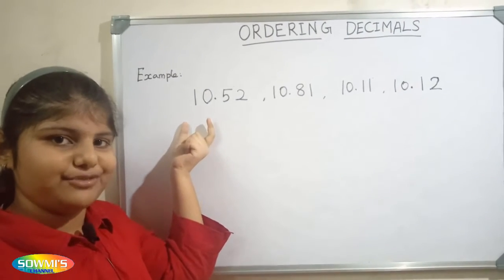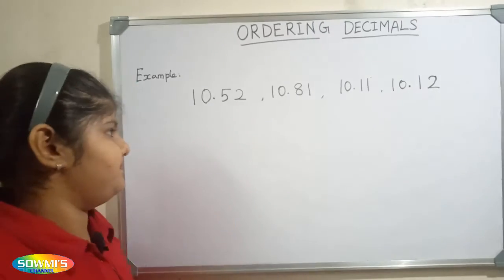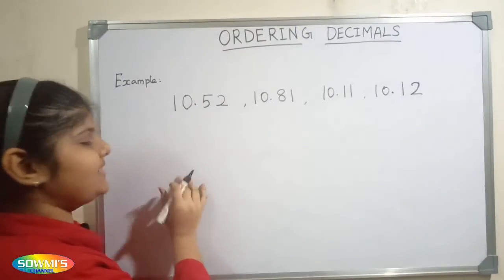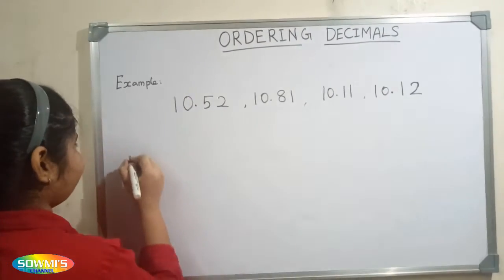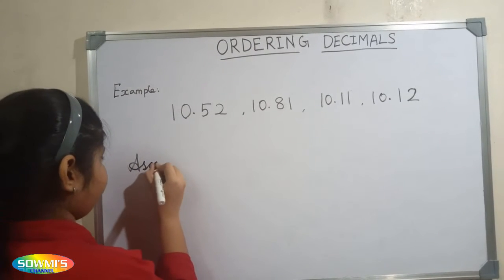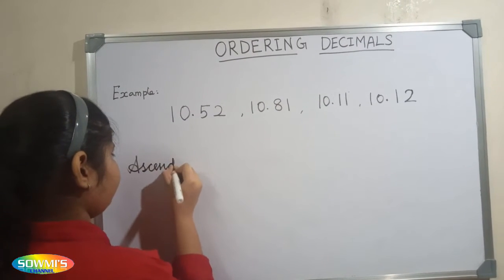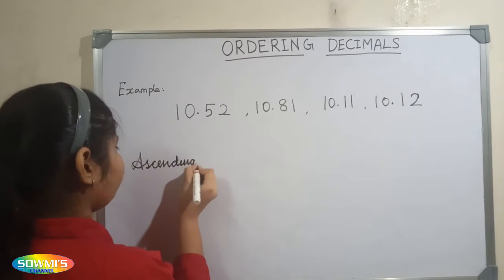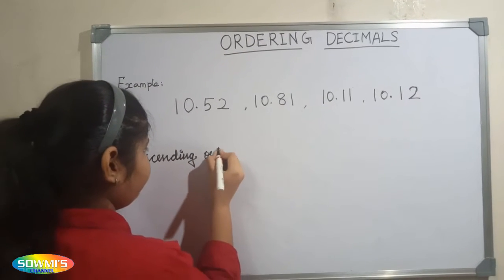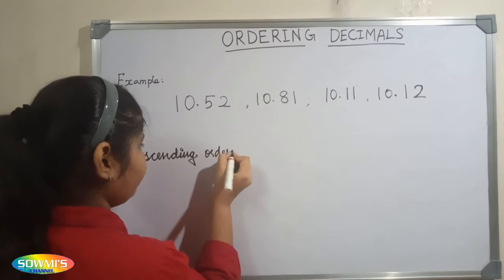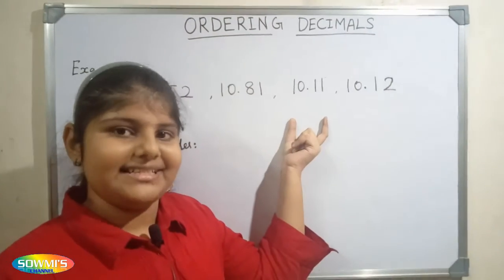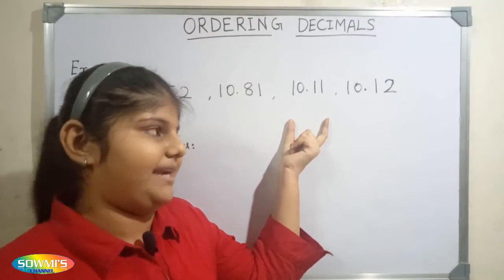Since the whole number part is the same, we have to compare the decimal part. Now we will arrange it in ascending order.